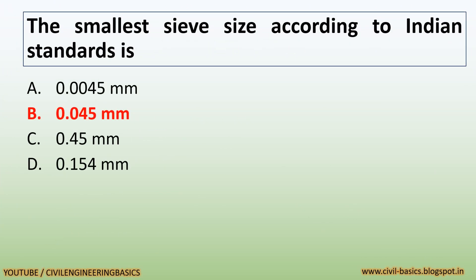The smallest sieve size according to Indian standards is 0.045 mm.